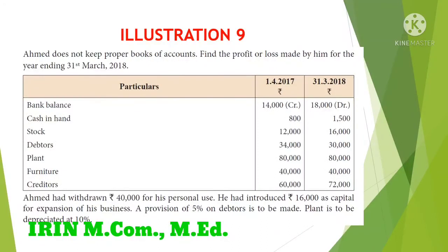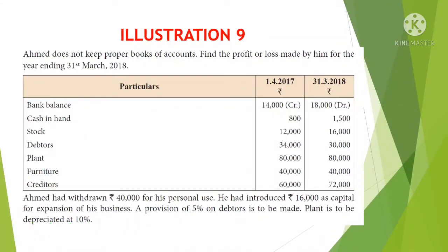Agamad does not keep proper books of account. Find the profit or loss made by him for the year ending 31st March 2018. The particulars are given for 1-4-2017 and 31-3-2018.